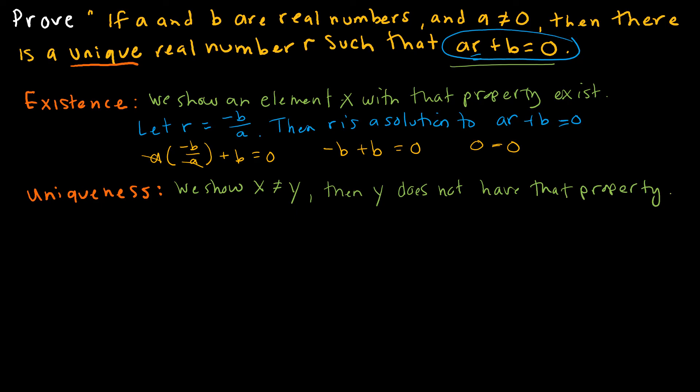Now I have to show that it is unique. So I'm going to say suppose that s is a real number such that as plus b equals 0. I'm essentially saying it's not unique. I've got this other value, as plus b equals 0.